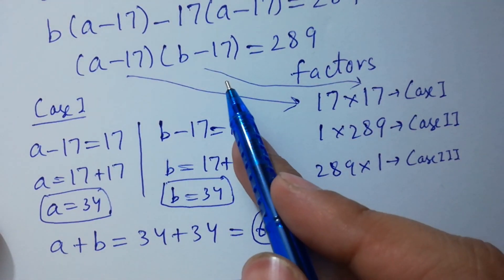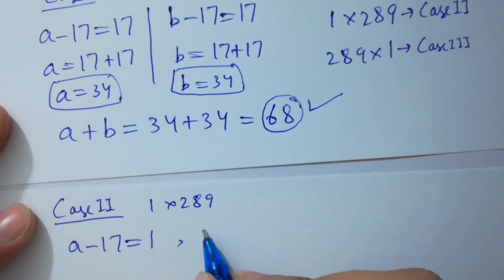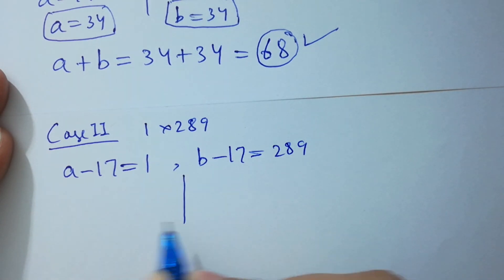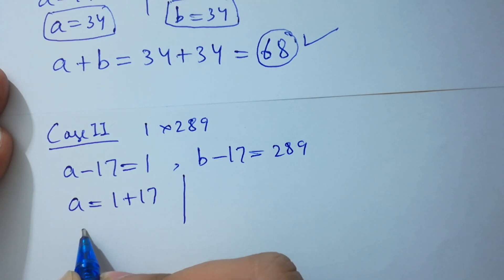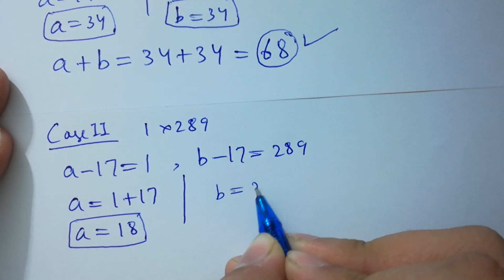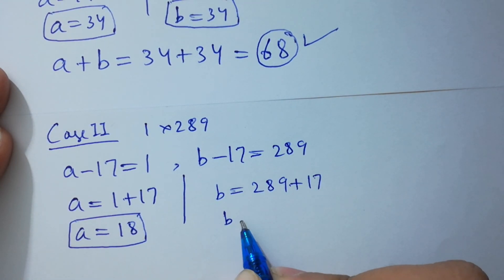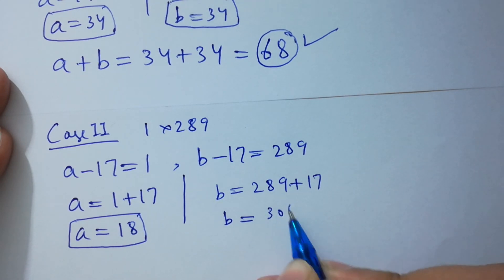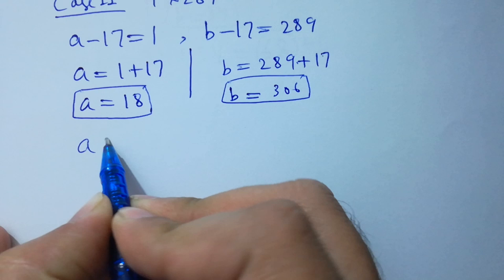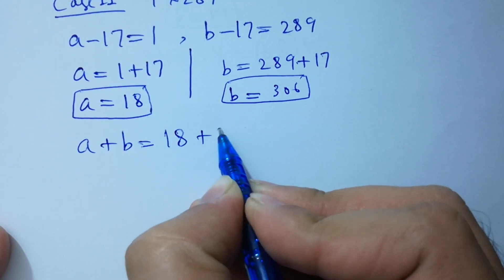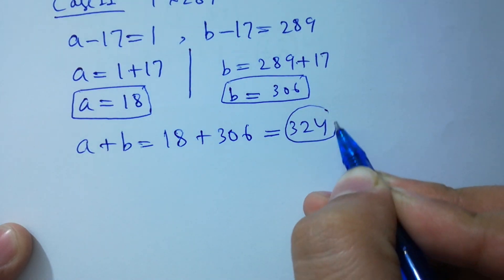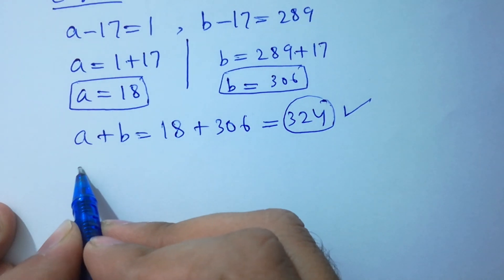Case 2 is 1 times 289: a minus 17 equals 1 and b minus 17 equals 289. So a equals 1 plus 17, which is 18, and b equals 289 plus 17, which is 306. Therefore a plus b equals 18 plus 306, which equals 324.